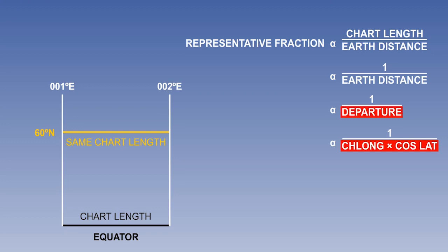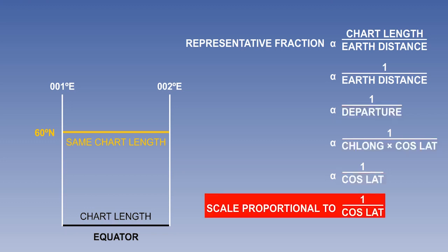Departure is change of longitude times cosine of the latitude. But look at the diagram again. The change of longitude is constant at any latitude. It's one degree. So because our equation is one of proportionality, not equality, we can take out change of longitude. The scale at any latitude is therefore proportional to the reciprocal of the cosine of the latitude.